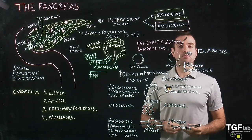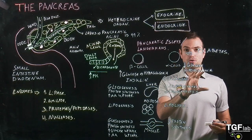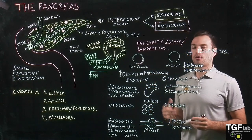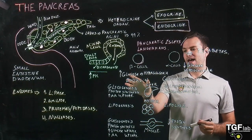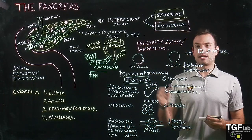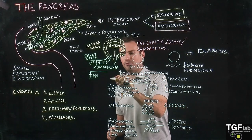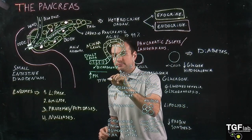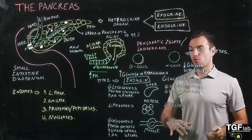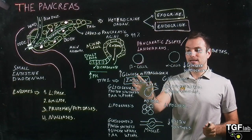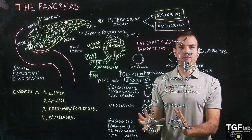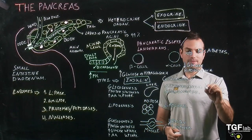We have two different types of diabetes: diabetes type 1 and diabetes type 2. Diabetes type 1 is the genetic diabetes — it is a result of the lack of production of insulin or the production of insulin that is not functional. Diabetes type 2 is not related to the secretion of insulin, but is related to the action of insulin in the different tissues of our body.